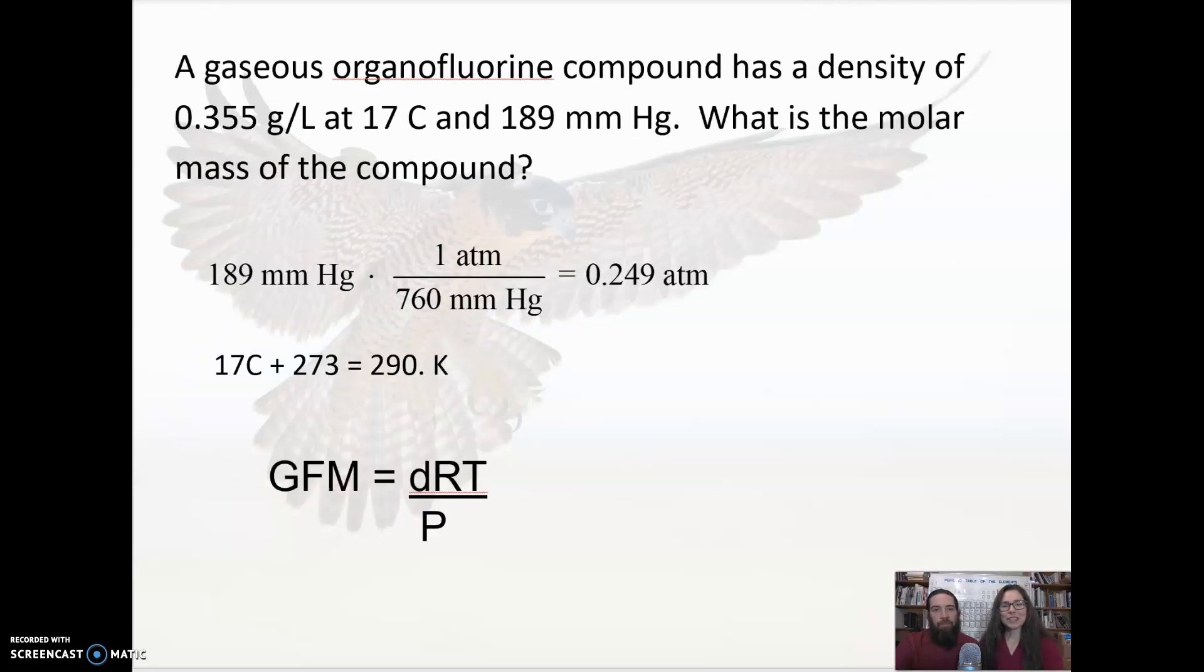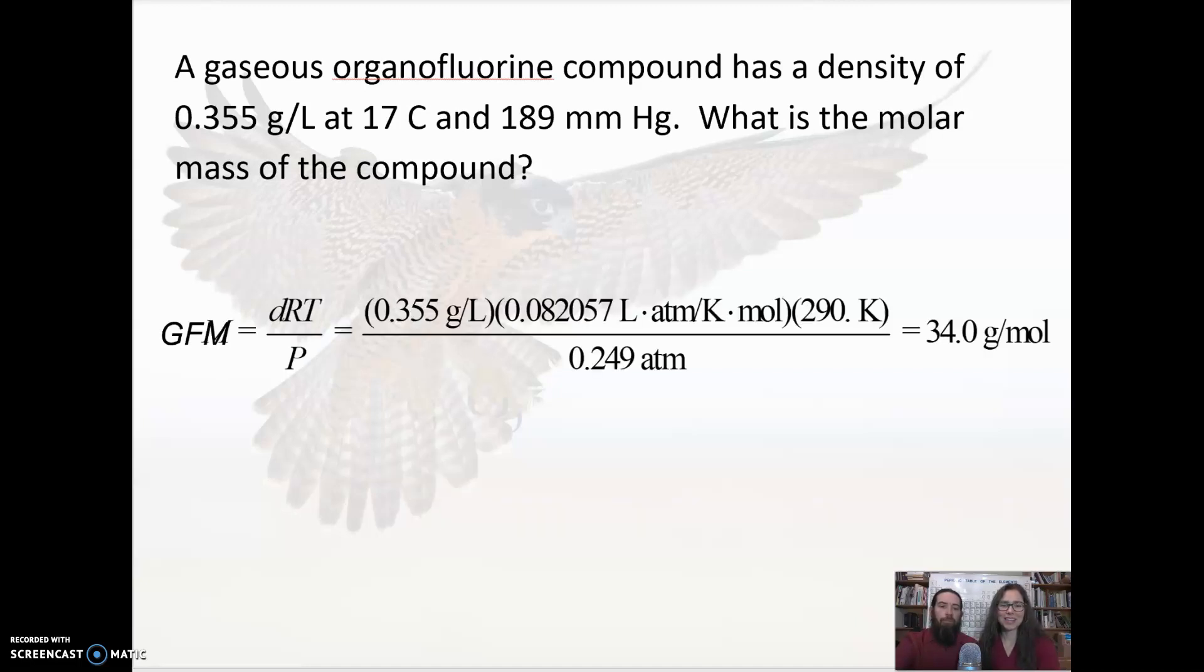All right. So let's put this to use here. So gaseous organofluorine compounds. We don't know what it is, but we know that it has carbons and nitrogens and fluorines in there. We know the density, so we're able to measure that in grams per liter. We have a temperature in Celsius. Uh-oh. Gases, Celsius? We have to change that to Kelvin for sure. And then millimeters of mercury, you want to change that into atmospheres if you're going to use R. And we're looking for what the molar mass of the compound is. So this is the formula that we're going to use. So we put it right in. Density times RT over P. Make sure that your units are appropriate, and we can cancel all of our units. And what we're left with is grams per mole. And that's what we're looking for for our molar mass.